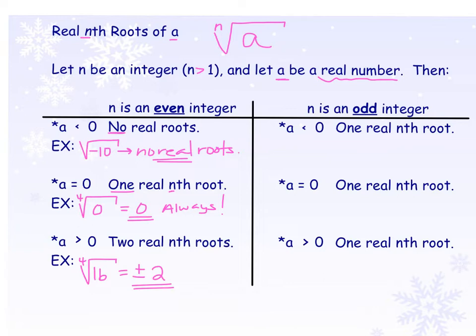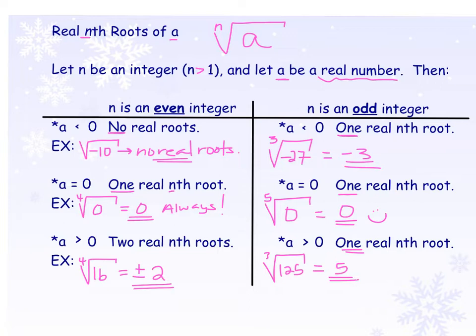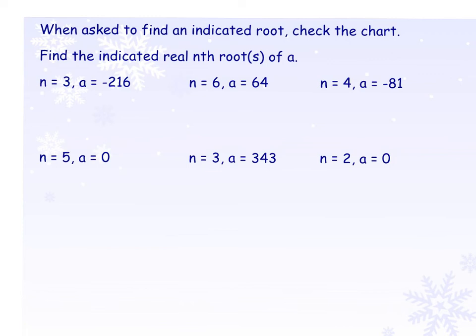If n is an odd integer, like a cubed or a fifth root, you can actually have a solution when a is less than 0. If you have a negative number on the inside — for example, the cubed root of negative 27 — 27 is on the perfect cubes list as 3 cubed. Negative 27 would also be on that list and the answer would be negative 3. When the base is positive and the root is odd, unlike even roots, we still get only one real solution. The cubed root of positive 125 is only positive 5.